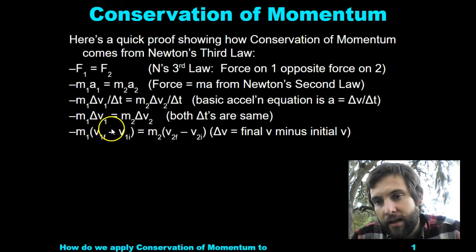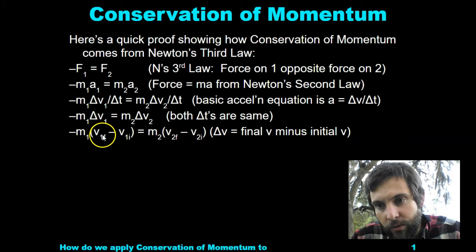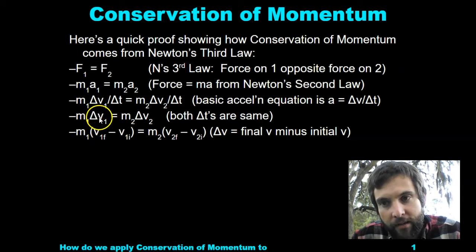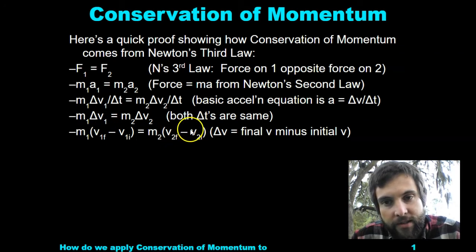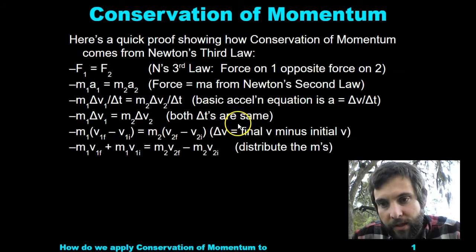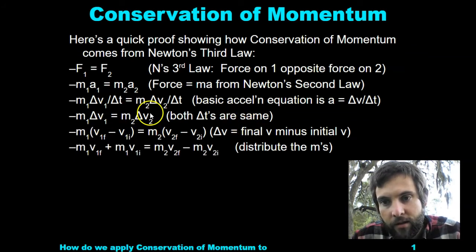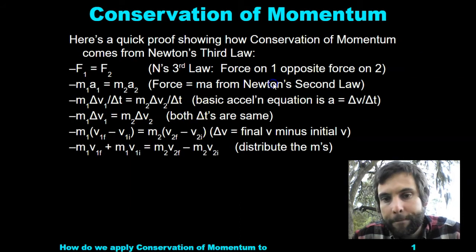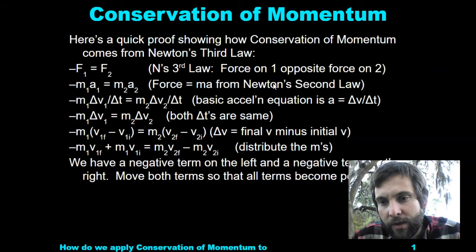Then we have M times delta V₁, which is V1F minus V1I — final minus initial. That's what delta means. Final minus initial for velocity 2 as well. Distribute the M's: multiply M by each term on both sides.